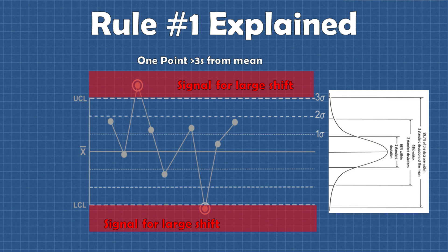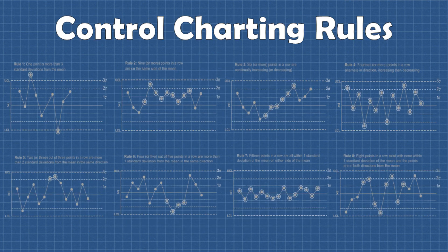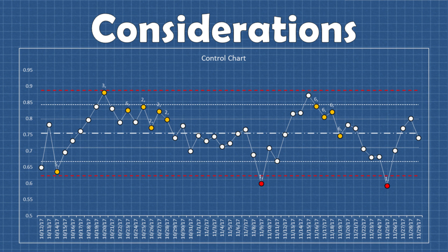Signals from rule one should always be top priority to investigate and correct. This is part of the reason why adding additional rules into your analysis should be done so with caution and consideration. The amount of resources you have to analyze, investigate and improve upon any signals you detect should always be considered.